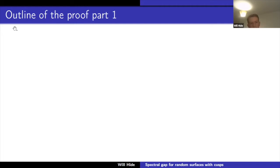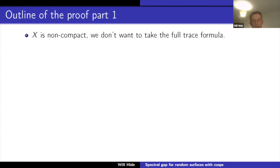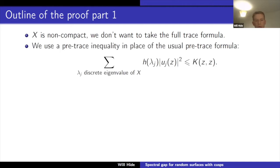Now I would like to outline the proof. Both the compact-case proofs use Selberg's trace formula. In our case there is a trace formula for non-compact finite area surfaces, but there are more terms arising from the absolutely continuous spectrum. To avoid this, we use a pre-trace inequality in place of the usual pre-trace formula. Normally one takes the pre-trace formula and integrates it over the fundamental domain. We prove a pre-trace inequality that only involves the discrete eigenvalues of the surface X.